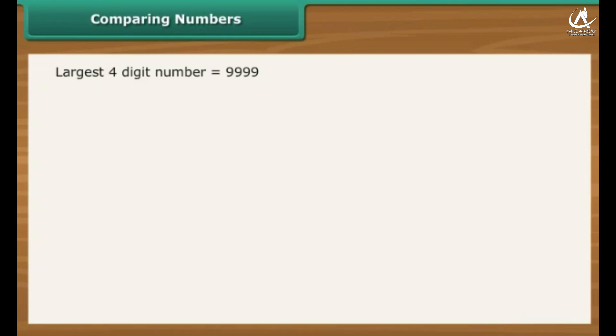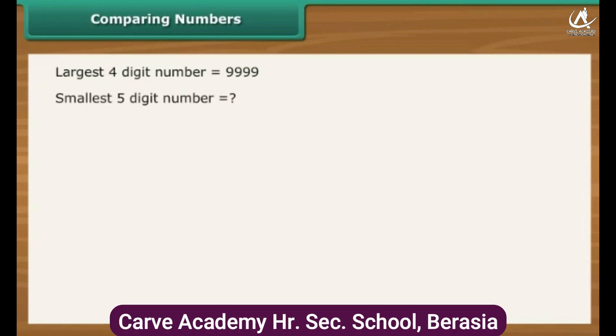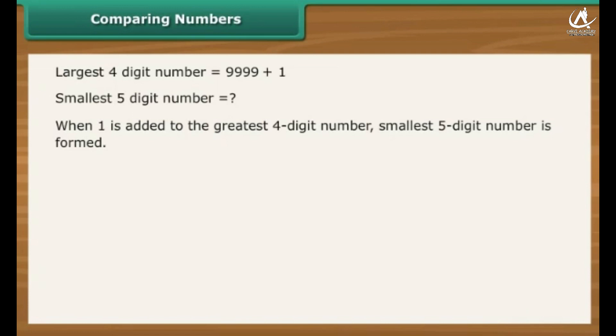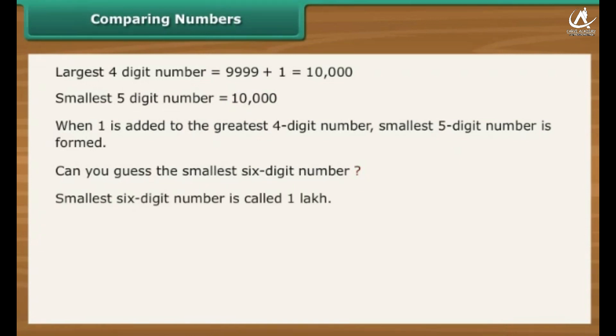What should be added to this number to make smallest five-digit number? The answer is, we need to add 1. Let us find out. On adding 1 to 9,999, we get 10,000, which is smallest five-digit number. Can you guess the smallest six-digit number? Smallest six-digit number is 1 lakh.